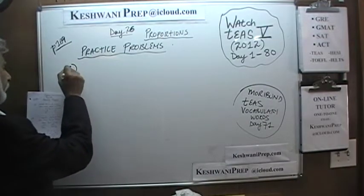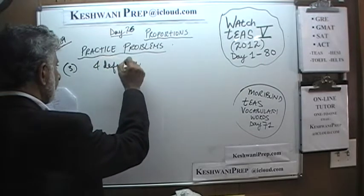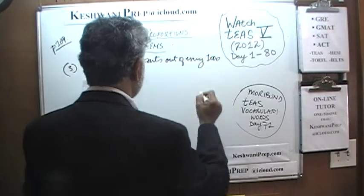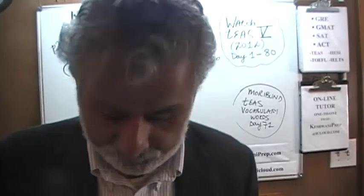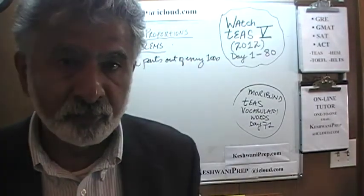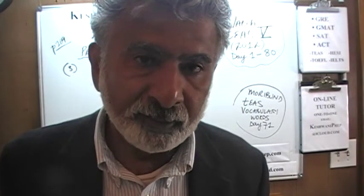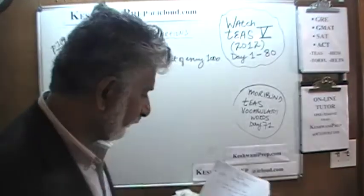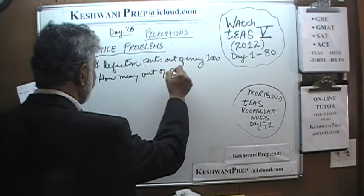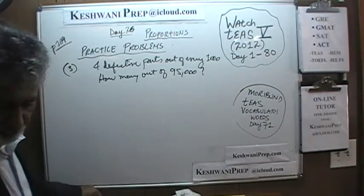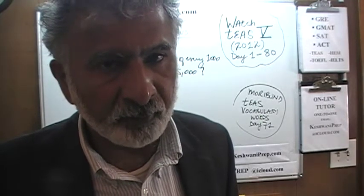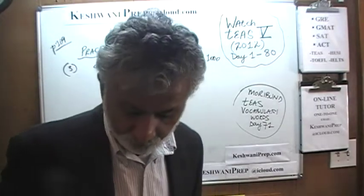Number 3. It says we are going to have 4 defective parts out of every 1000 televisions. Apparently we are making something in a factory — televisions. Their past experience has shown them that out of every 1000 televisions that roll off the assembly line, 4 are defective. The question simply is, if we know that is the rate, how many defective units out of 95,000? Maybe that is how many they make in a day, a week, or a month — whatever the period, they want to find out for a run of 95,000 televisions how many can we expect to find defective.